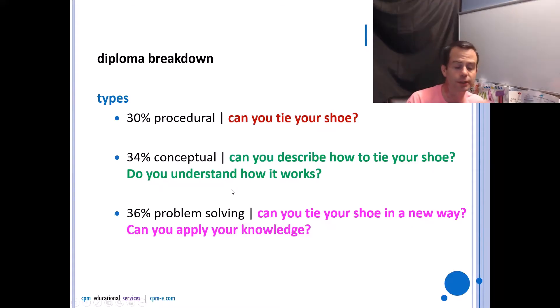What does that mean? Procedural essentially is, can you tie your shoe? Just show me how you've always tied your shoe. You almost do those types of questions without thinking because you've done them for so long. These are kind of like just the rote memory, basic entry level questions. 34% is conceptual. So now it's going to be, okay, yeah, we know you can tie your shoe, but could you describe how to tie your shoe? Do you understand how it works? We're getting into a little bit more of a deeper thought process there. We're peeling the onion off a little bit and just going a little deeper.